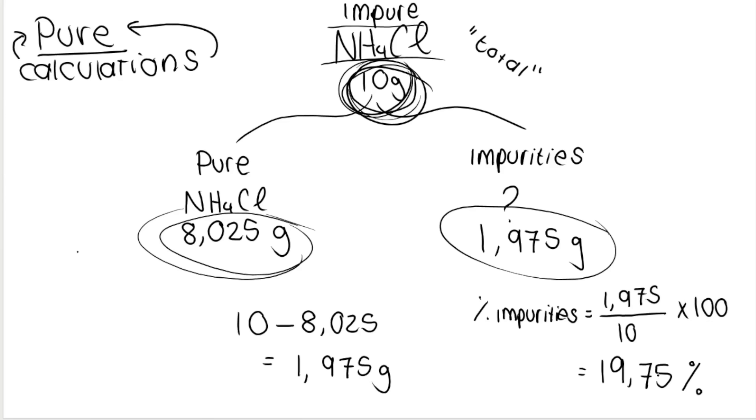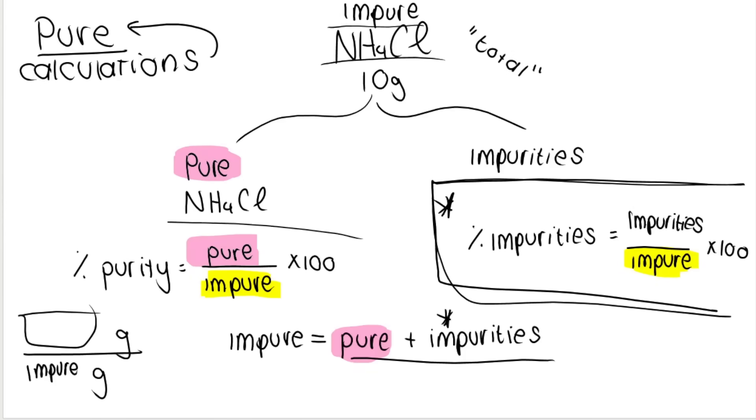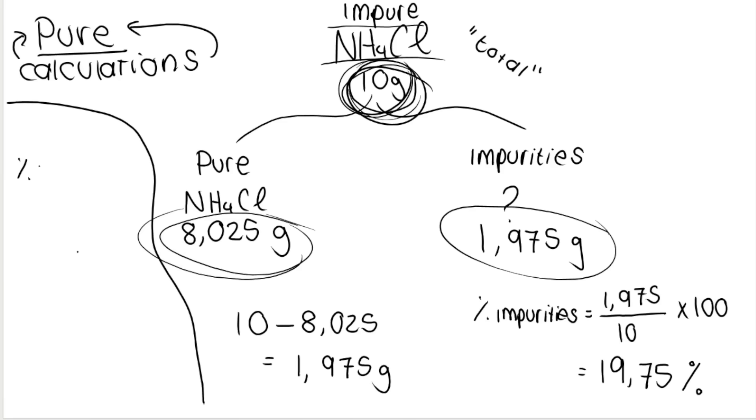If you don't like this method, and you just want to learn one of these formulas, let's say you just want to learn the percentage purity formula, you can do it. Then what you would do is work out the percentage purity. So percentage purity would be your pure stuff over your impure, your total times 100. And you would get 80.25%. And then you would say, well, 80.25% is the pure stuff. So therefore, the impurities is the other stuff. So then you would say 100 minus 80.25. And you will get the same answer, 19.75%.